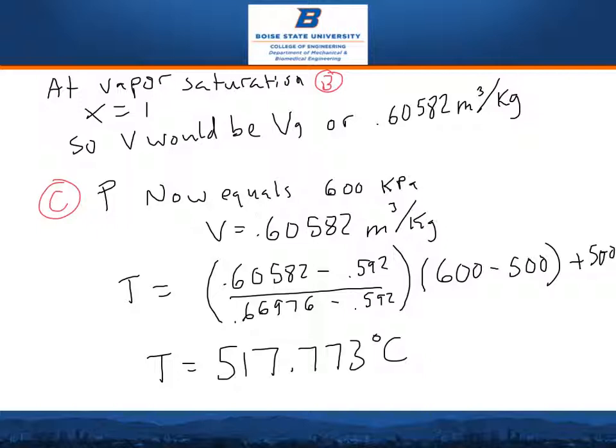Then you divide that by 0.66975 minus the same 0.592. Next you multiply that by 600 minus 500, since you're trying to find the exact temperature between 600 and 500 from the saturated vapor. Then you add 500, so you know the starting value. When you plug that all in, you get a temperature of 517.773 degrees Celsius.